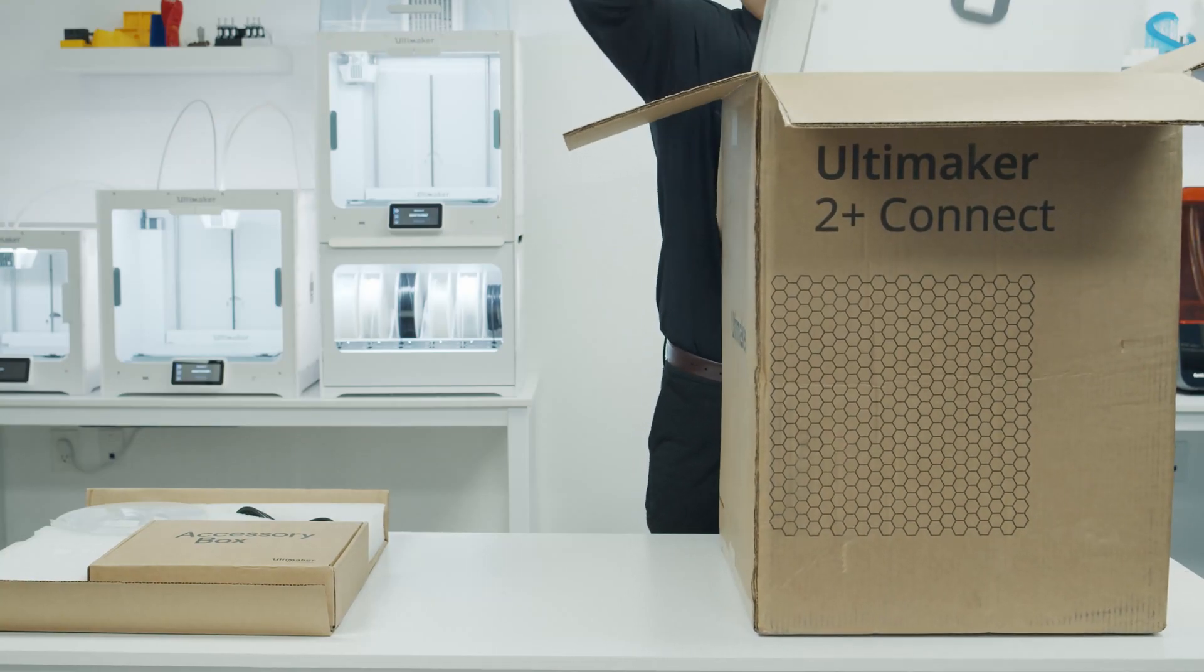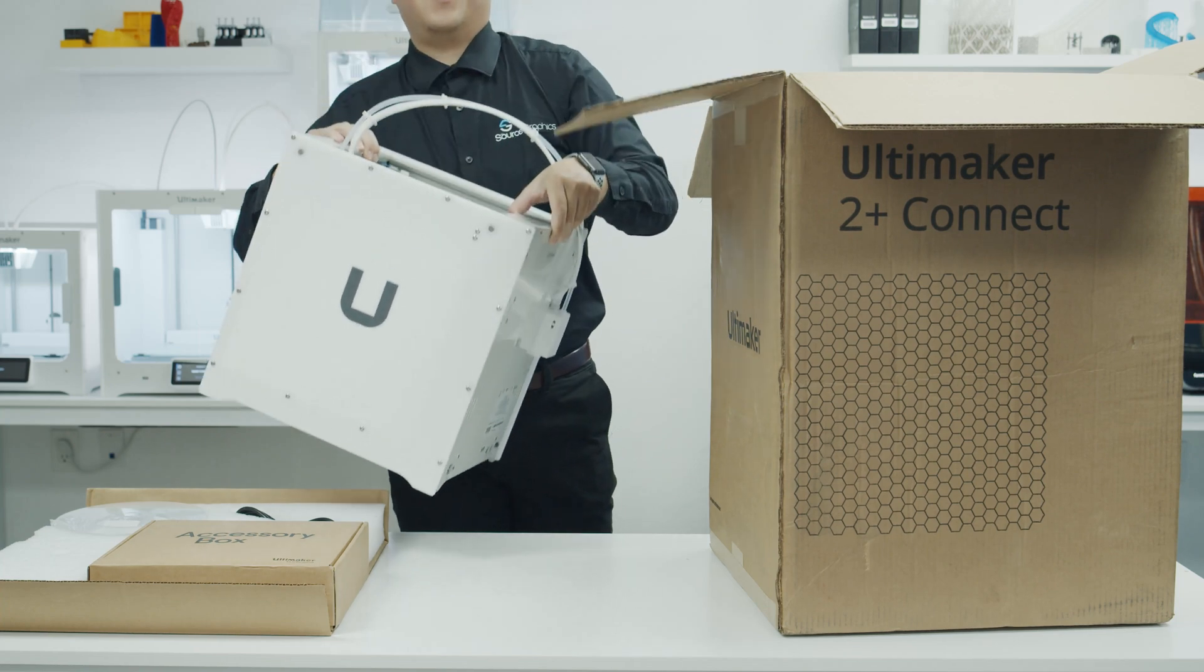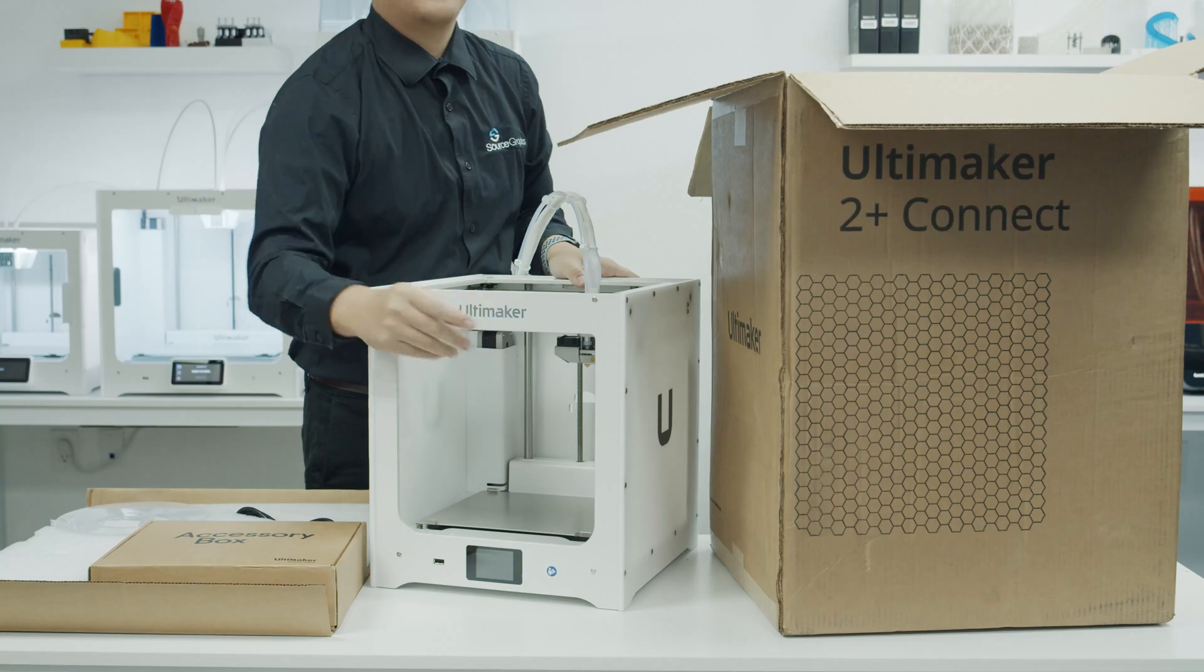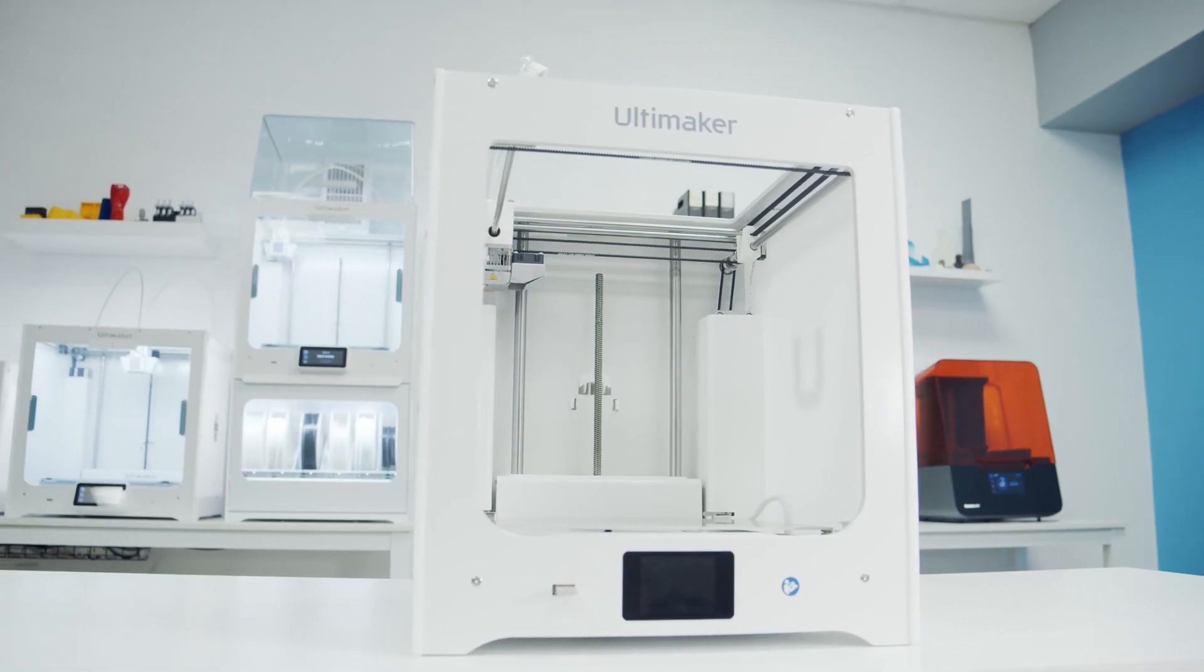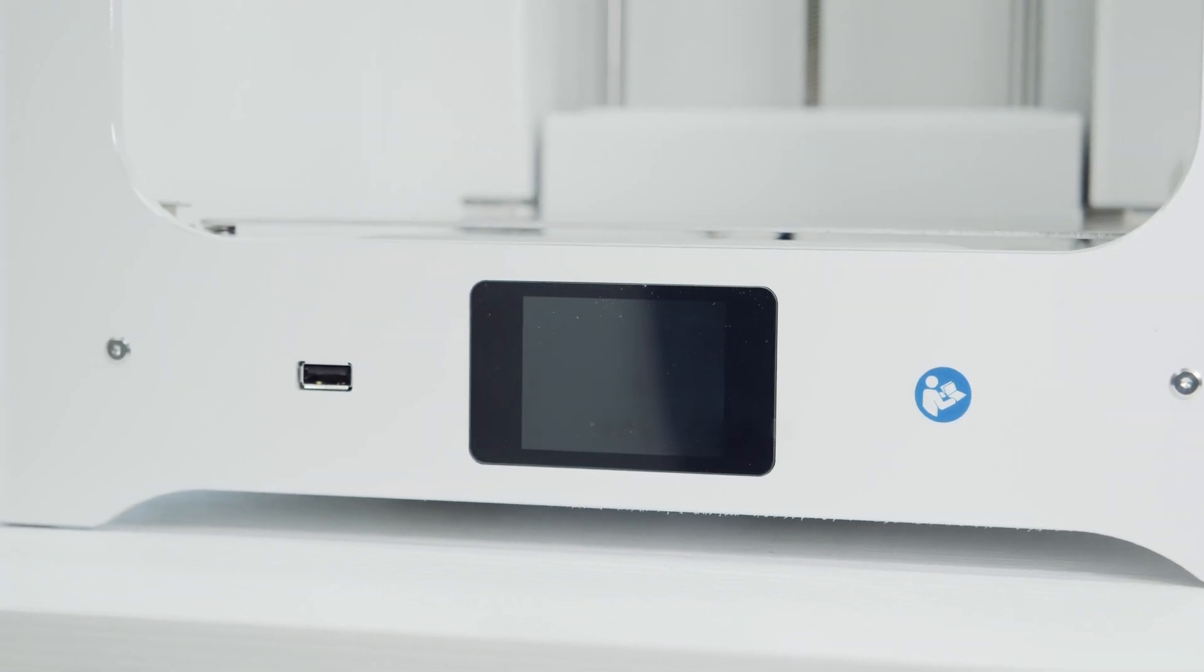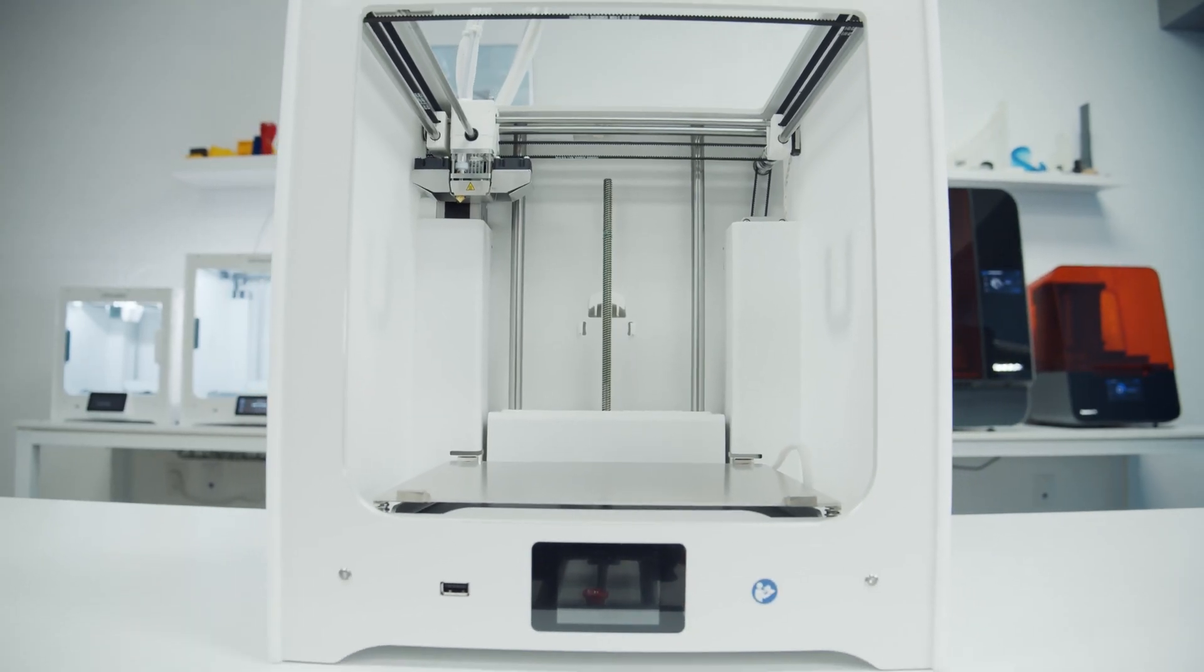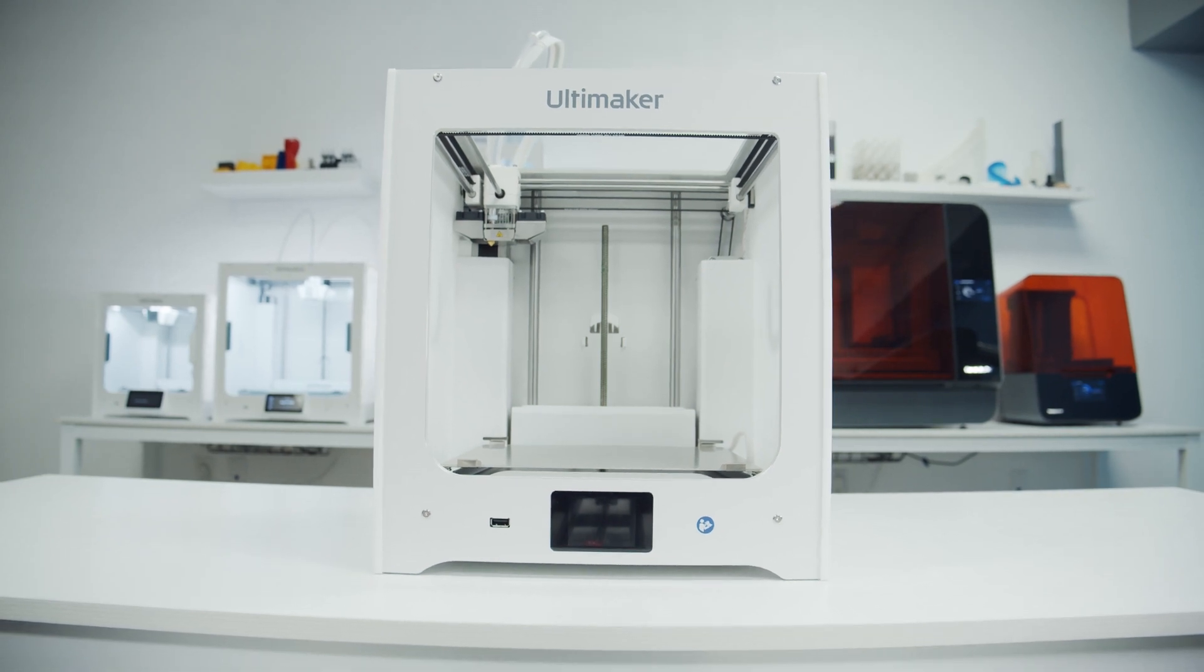After the accessories, the last thing in the box is the printer itself. The Ultimaker 2 Plus Connect is a single extrusion FDM printer with an 8.7 x 8.6 x 8 inch build volume. It has an easy to use 2.4 inch color touchscreen. The 2 Plus Connect is a reliable first step into the Ultimaker world of easy remote 3D printing.